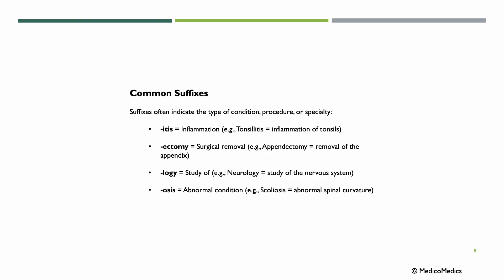What about some suffixes? Suffixes often indicate the type of condition, procedure, or specialty. For example, itis, as we mentioned, means inflammation. So if we have the tonsils and add itis, we have tonsillitis. Cardi gives us carditis; gastritis; and if you have nephro, meaning kidneys, you then have nephritis. Ectomy means surgical removal — for example, appendectomy means the removal of the appendix. Logi is the study of something, and adding the combining vowel, we get neurology — the study of the nervous system.